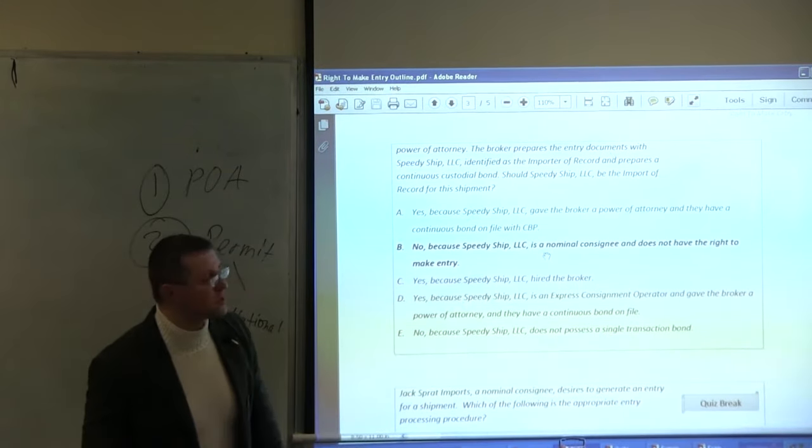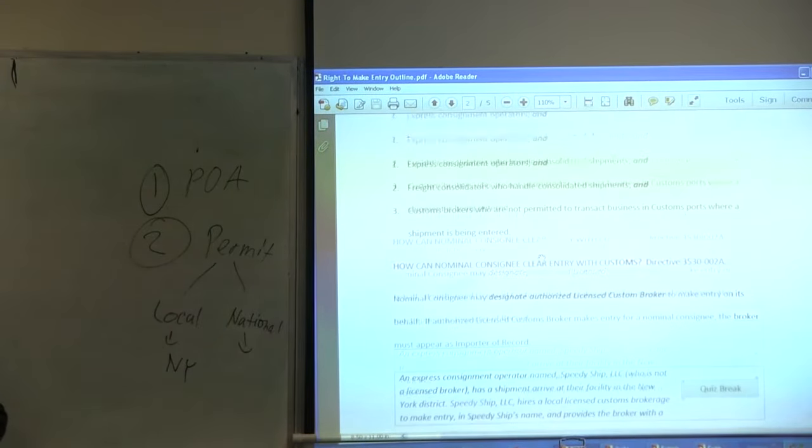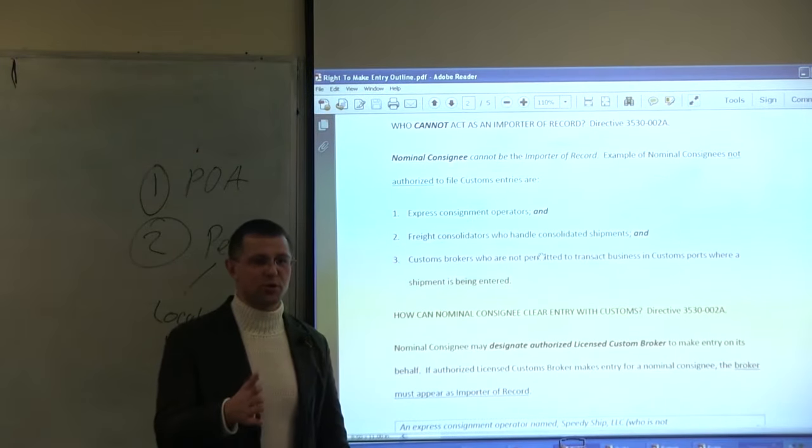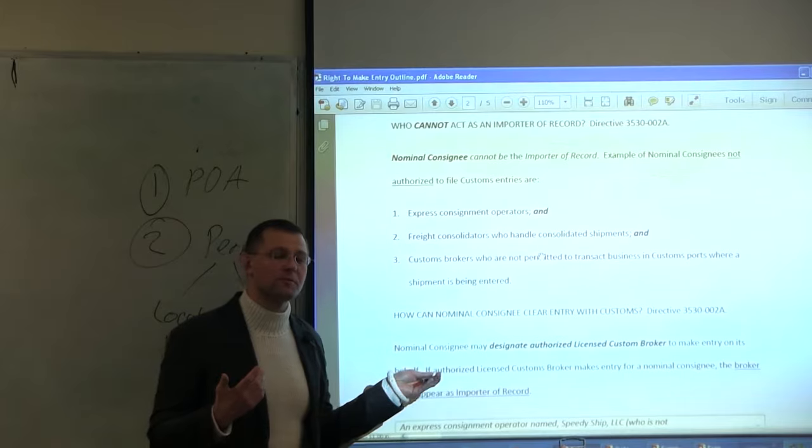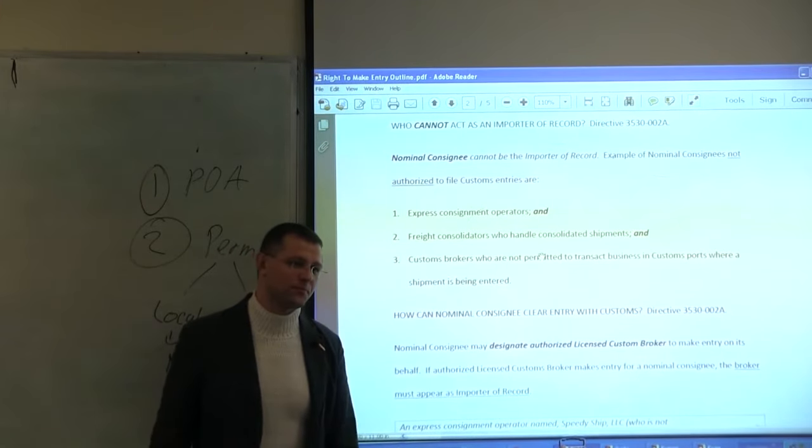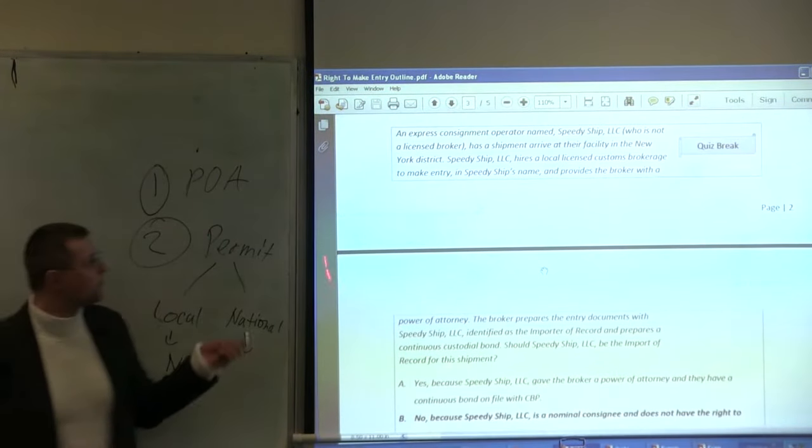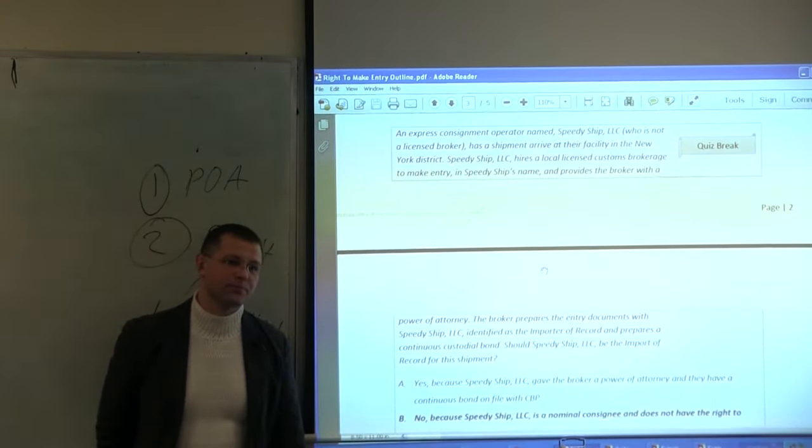Because consignment operators, unless they are licensed, cannot do that. That broker, even though proper, must put its own name as importer of record. So what the question comes down to: if you have a nominal consignee such as express consignment operator, freight consolidator, and you go to the licensed customs broker who can... What should have licensed customs broker for SpeedyShip.LC done? Who should be the importer of record for the shipment? The licensed customs broker. The licensed customs broker and licensed customs broker bond must be on it.